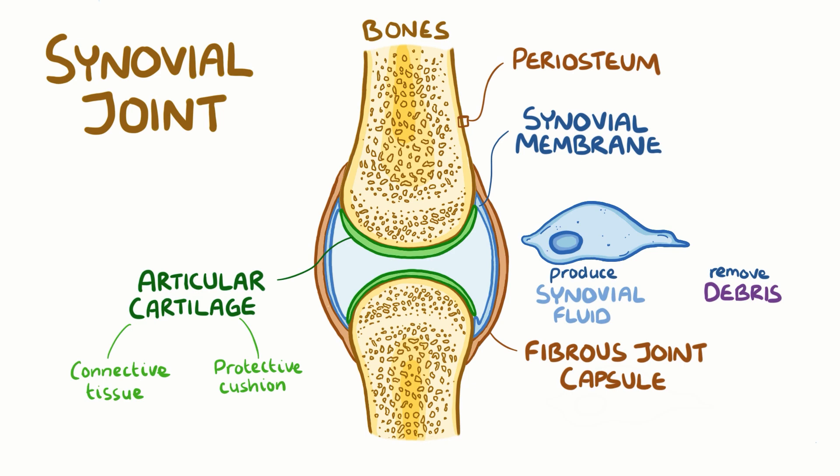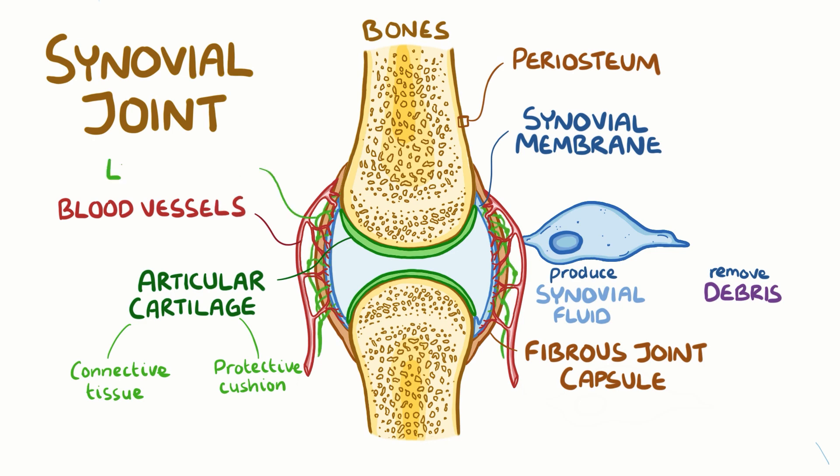To help serve these synovial cells, the synovial membrane also has blood vessels and lymphatics running through it. Together, the synovial membrane and the articular cartilage form the inner lining of the joint space.